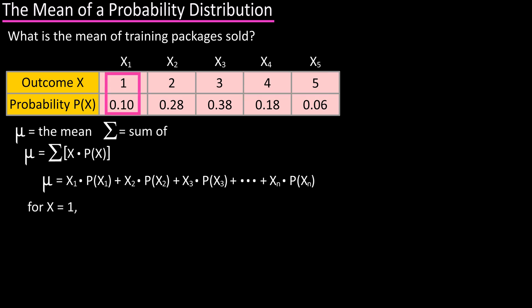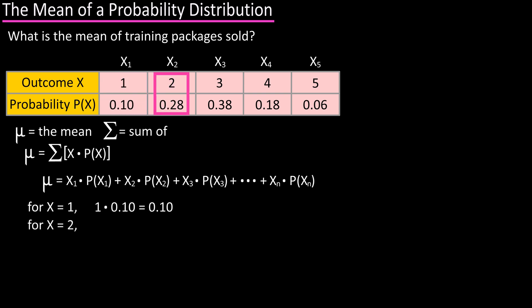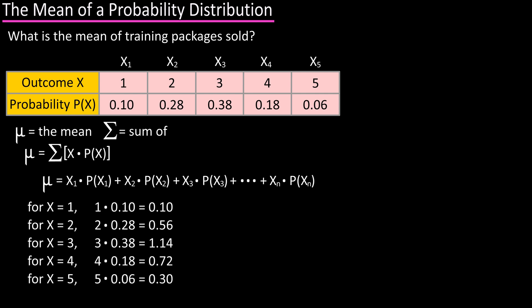So from our table, the first value x can assume is 1, and we'll multiply that by the value's probability, which is 0.10, and that equals 0.10. The next value x can assume is 2, and we'll multiply that by that value's probability, which is 0.28, and that equals 0.56. You would continue this process as you see here.